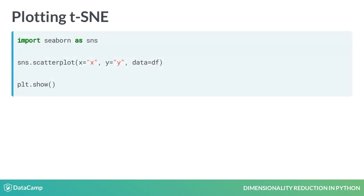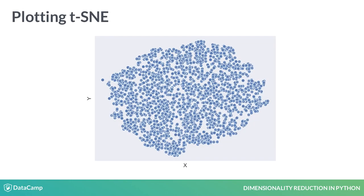We can now start plotting this data using Seaborn's scatterplot method on the X and Y columns we just added. The resulting plot shows one big cluster, and in a sense this could have been expected. There are no distinct groups of female body shapes with little in between. Instead, there is a more continuous distribution of body shapes, and thus one big cluster.